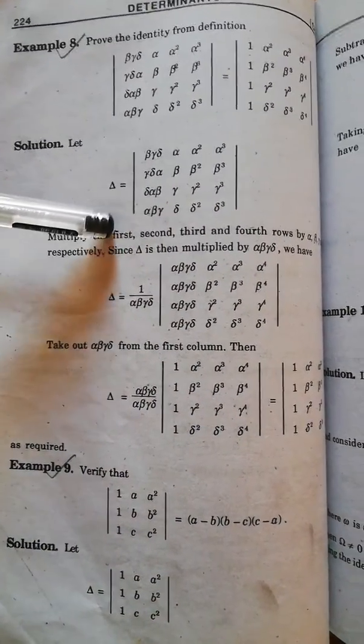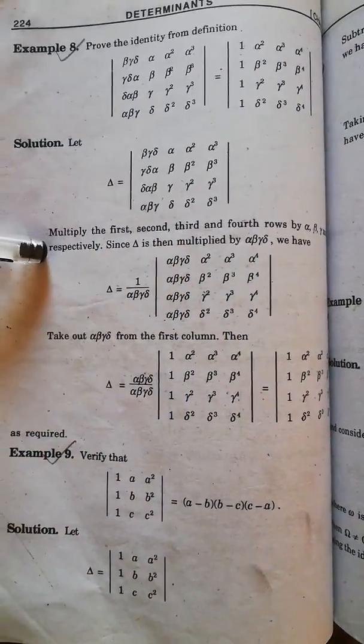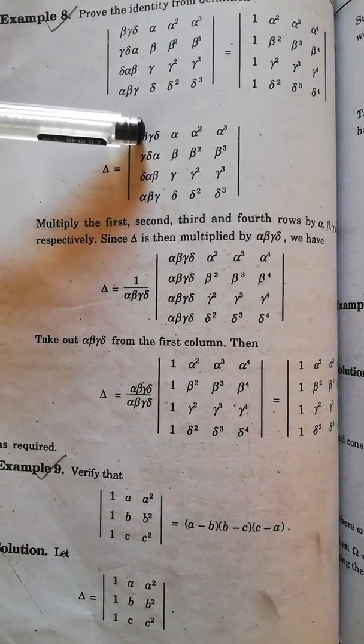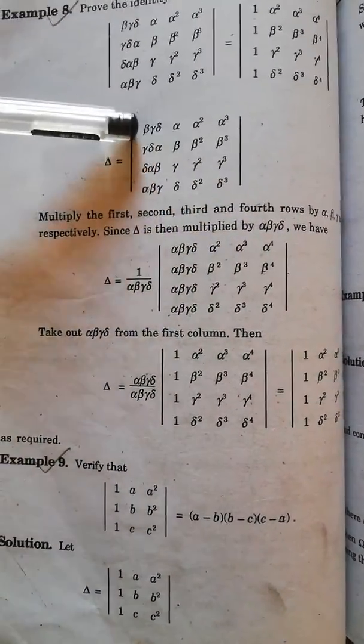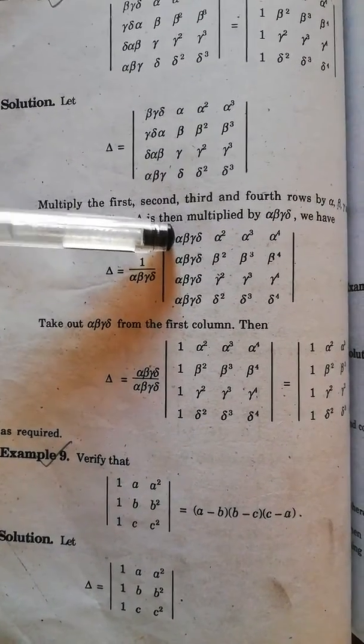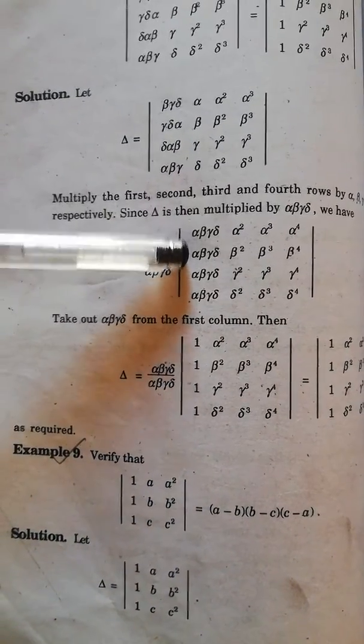As you can see, multiply the first, second, third, and fourth rows by alpha, beta, gamma, and delta. When you multiply the first row with alpha then you get this. On the same way, when you multiply beta with the second row you get this, gamma with the third row.